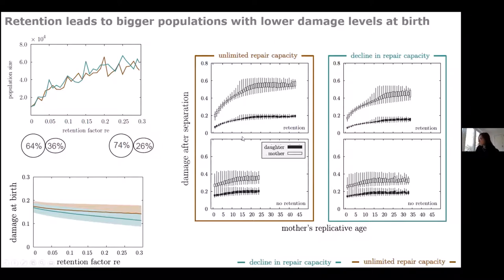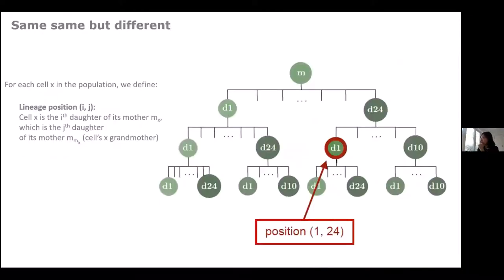Comparing the two repair strategies separately: the declining repair capacity lowers damage in daughter cells and also lowers damage in the mother cell. You can see the clear separation between mother and daughter damage levels in the retention case, whereas without retention the separation is much lower because damage isn't retained — it spreads to the daughter.